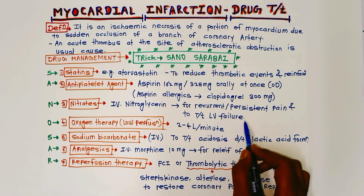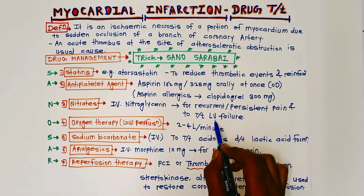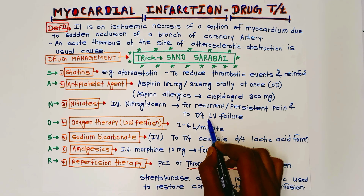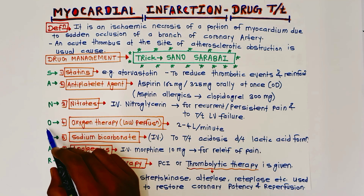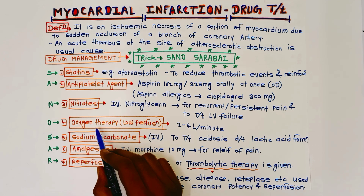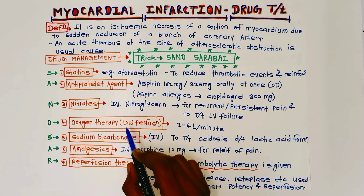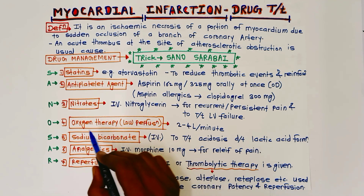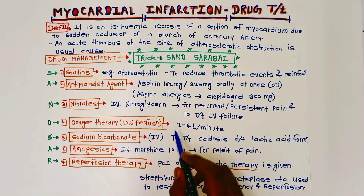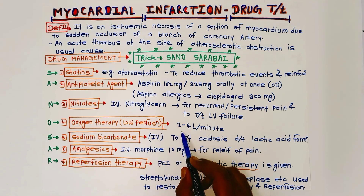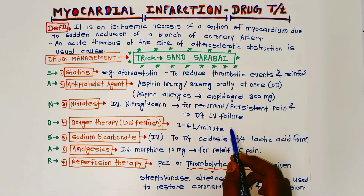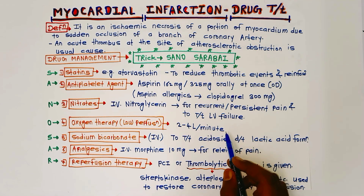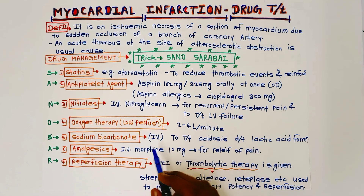N for nitrates: intravenous nitroglycerin is given for recurrent or persistent pain and to treat left ventricular failure. Next, O for oxygen therapy: 2 to 4 liters per minute of oxygen is administered as low-flow oxygen therapy.